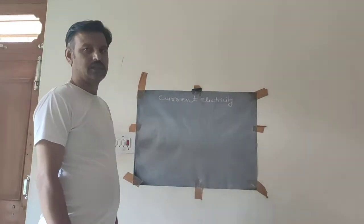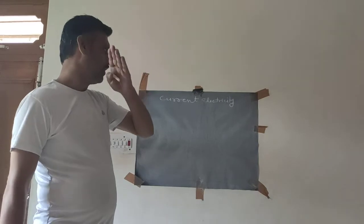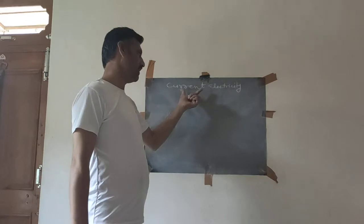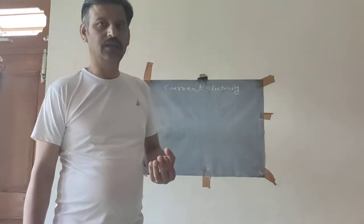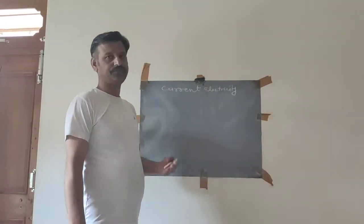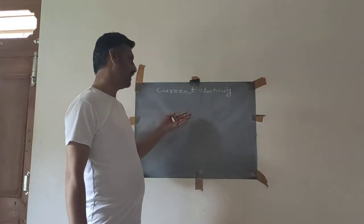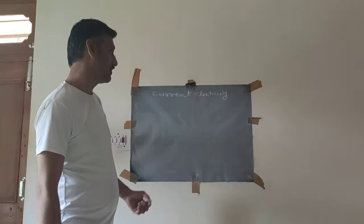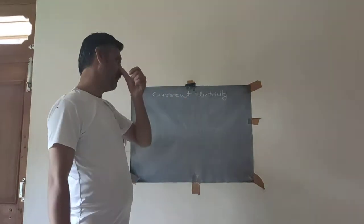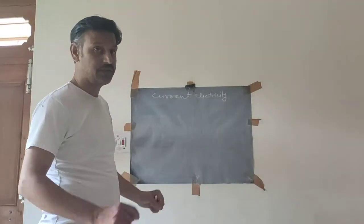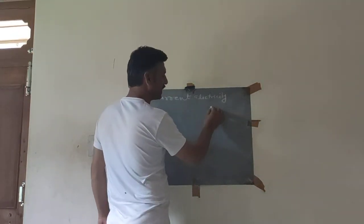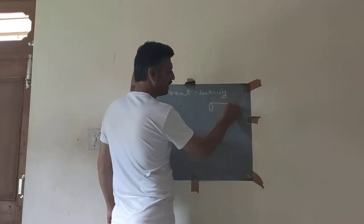Today's topic is Unit 2 of Class: Current Electricity. Current electricity is the branch of physics which deals with the study of charge in motion. When charge is in motion, electric current is constituted, and understanding the necessary conditions for this is important.